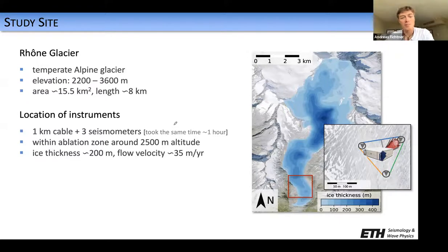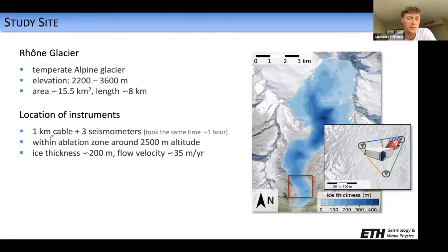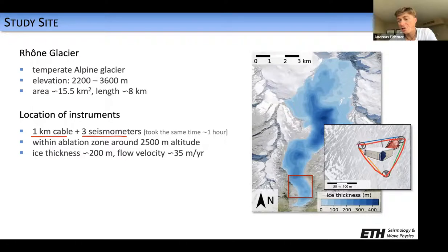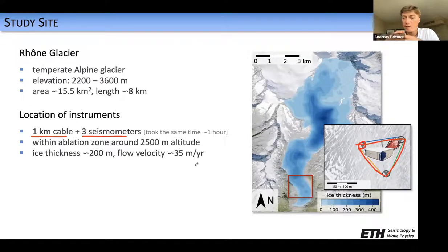During our experiment, we deployed seismic instruments in the lower part of the glacier, marked by a red rectangle. We deployed two different kinds of instruments: a one-kilometer fiber optic cable and three seismometers. The fiber optic cable was deployed in the form of a triangle, with one seismometer at each corner. The important thing to note is that the deployment of both the three seismometers and the fiber optic cable took about one hour. So in one hour of deploying three seismometers, we got three sensors — and in one hour of deploying a one-kilometer fiber optic cable, we got 1000 sensors.